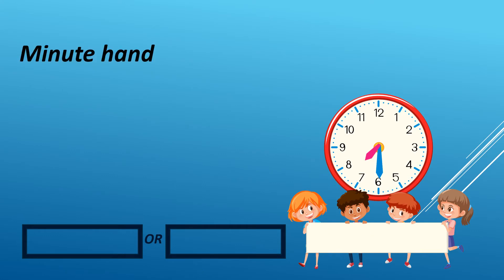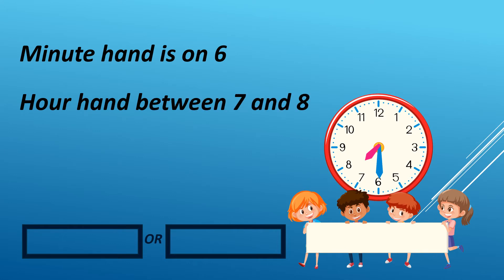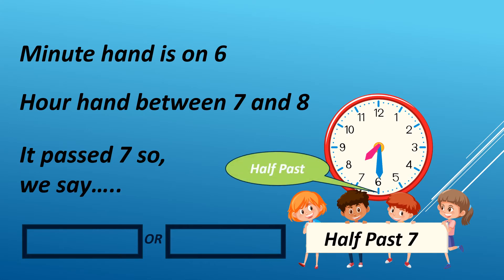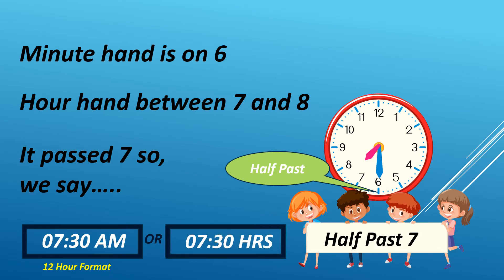When the minute hand is on 6 and the hour hand is between 7 and 8, it passed 7, so we say half past 7. It can either be AM or PM. For example, it is 7:30 AM in 12-hour format. We read it as 730 hours in 24-hour format.